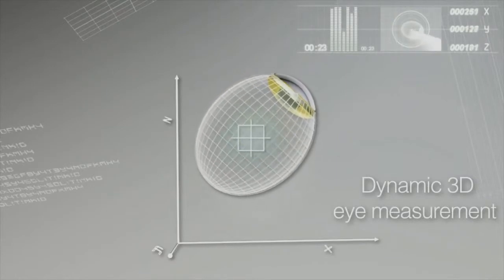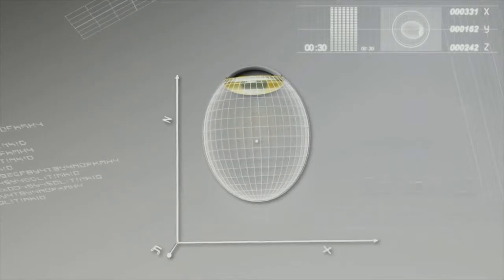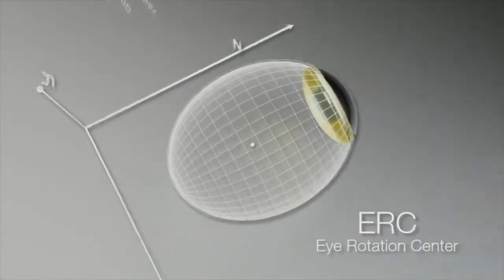This dynamic 3D measurement determines the exact spatial position of the eye rotation center, also known as the ERC.